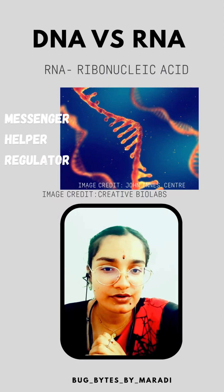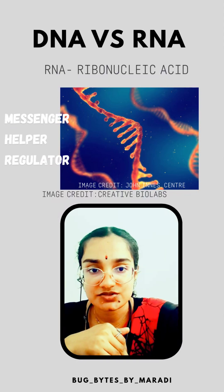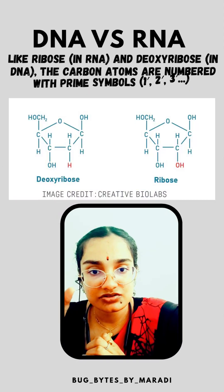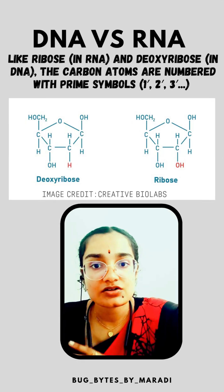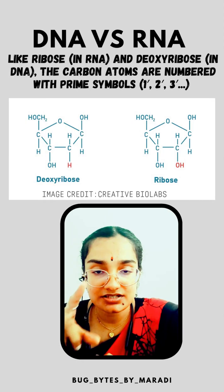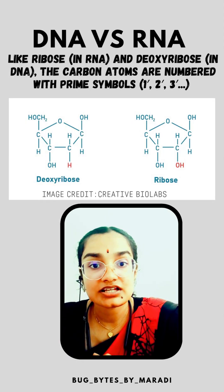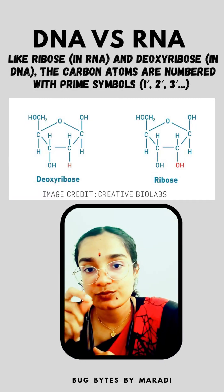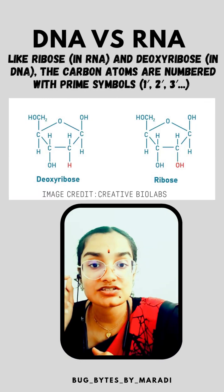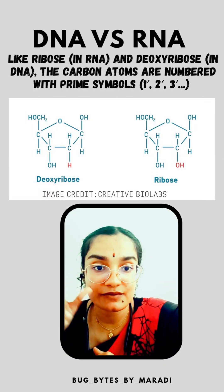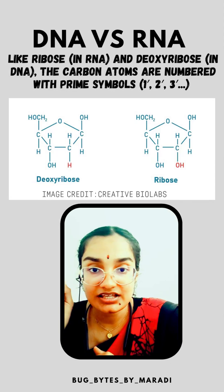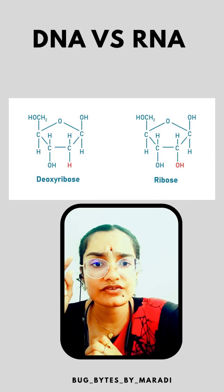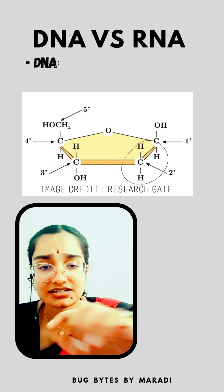RNA is ribonucleic acid, which works as a messenger, helper, regulator, and much more. In sugar molecules like ribose present in RNA, and deoxyribose in DNA, the carbon atoms are numbered with prime symbols — 1 prime, 2 prime, 3 prime, etc. — to distinguish them from the atoms present in the nitrogenous bases.